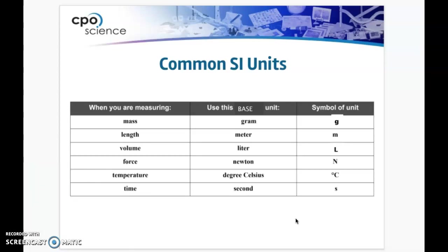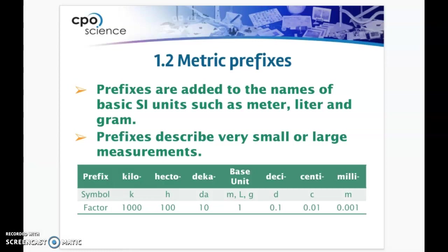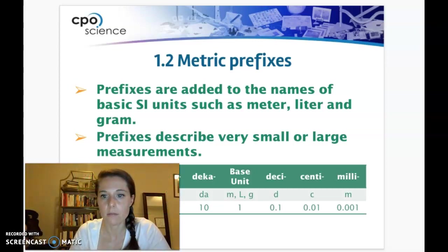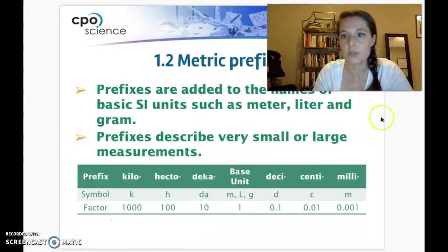We use degrees Celsius for temperature and we use seconds for time. So another great thing about the metric system is that once you know the units, all you have to do is add on a prefix to that unit to tell how big or how small that unit really is, and the prefixes stay the same regardless of the unit that you use.